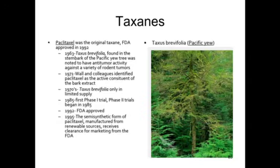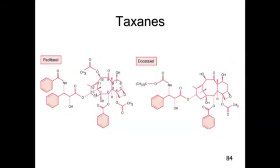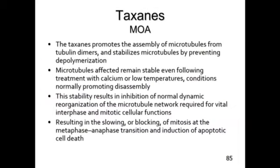Now jumping to the taxanes — a very interesting class. Paclitaxel was the original taxane, approved in 1992, found in the stem bark of Pacific yew trees. There was controversy about cutting down old-growth forests in the Pacific Northwest; today the drug is developed from a semi-synthetic form using a renewable source. The taxanes promote assembly of microtubules from tubulin dimers and stabilize them by preventing depolymerization — basically the tubules can't come apart once formed. They are non-functional, resulting in inhibition of normal dynamic reorganization and blocking of mitosis at the metaphase-anaphase transition and induction of apoptotic death.